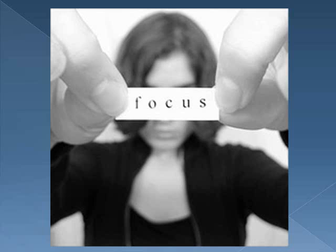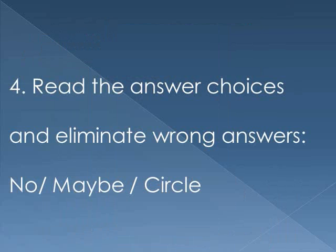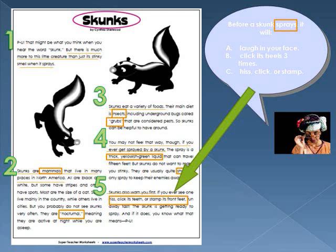The next step is to box in the most important words in each question, read the answer choices, and eliminate the wrong answers using no's or maybes, and then circling the best answer choice.